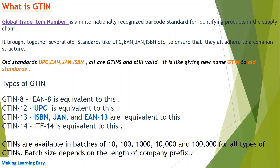Every unique product in the supply chain will have one product identifier which is called GTIN. When you are purchasing a product from the market — for example, a shampoo bottle — if you notice, you will find one barcode on that product. That is nothing but a GTIN, Global Trade Item Number, and it is unique across the supply chain, across the globe.